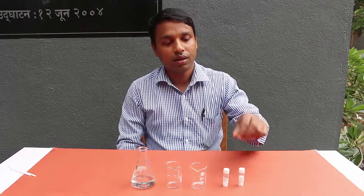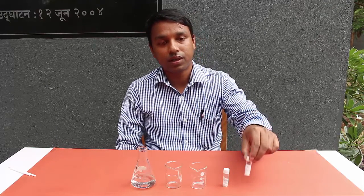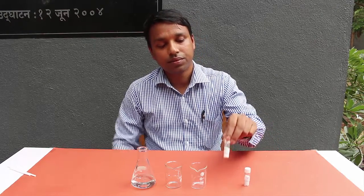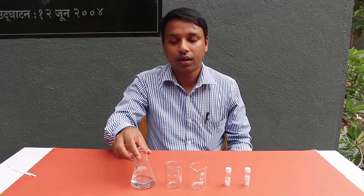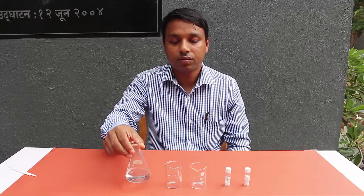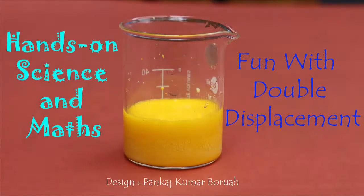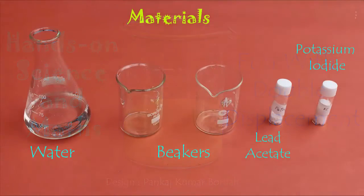Hello friends, today we are going to discuss the double displacement reaction. For this we need crystals of potassium iodide, crystals of lead acetate, two empty beakers, and a conical flask with water.